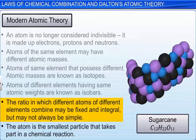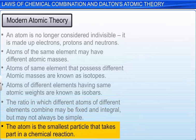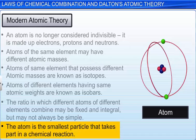The ratio in which different atoms of different elements combine may be fixed and integral but may not always be simple. For example, the elements C, H and O combine to form sugar cane. The ratio of the elements 12 is to 22 is to 11 is fixed and integral but it's not a simple ratio. The atom is the smallest particle that takes part in a chemical reaction.